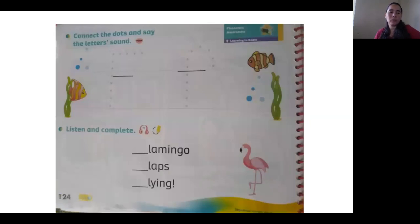Page 124, connect the dots. Okay, you're going to connect them. This is the letter F and this is the lowercase F. Listen and complete: flamingo, you're going to write the letter F. Flat, you're going to write the letter F.